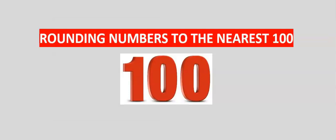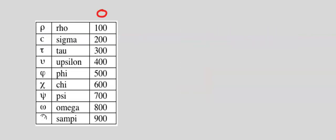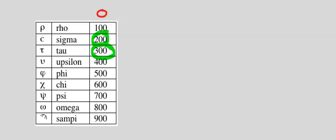Let's consider rounding numbers to the nearest hundred. This will consider numbers between zero and one hundred, one hundred to two hundred, two hundred to three hundred, and continues to infinite numbers.